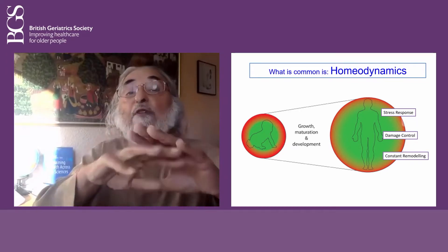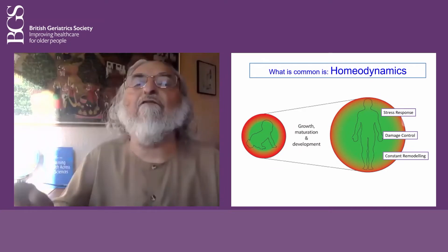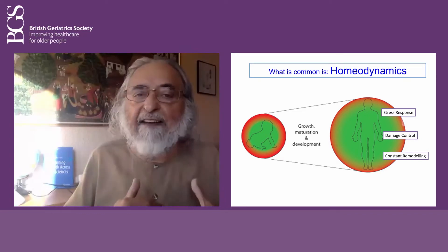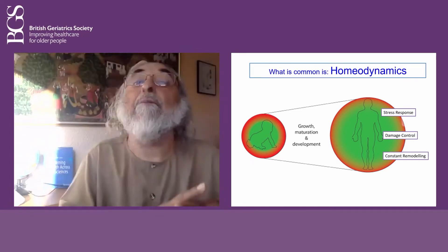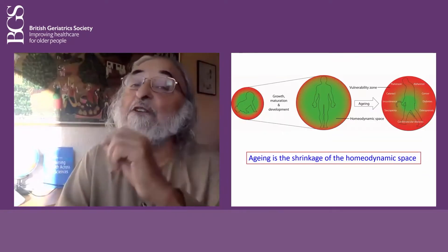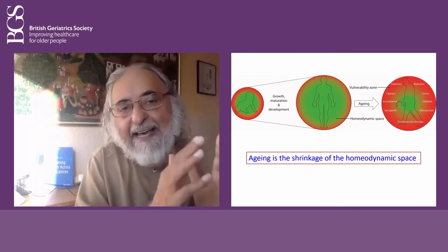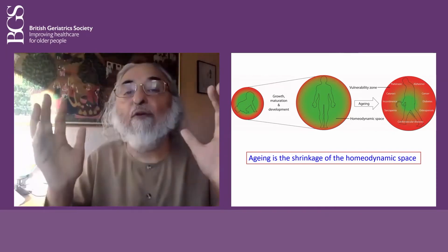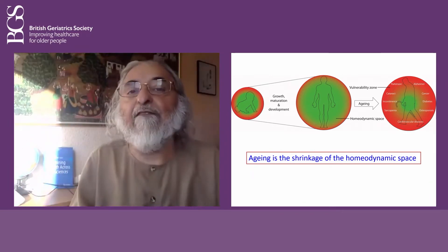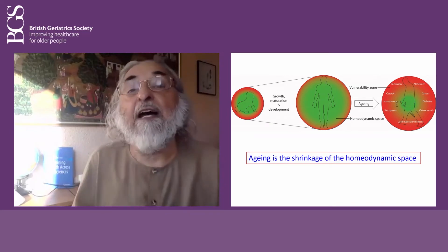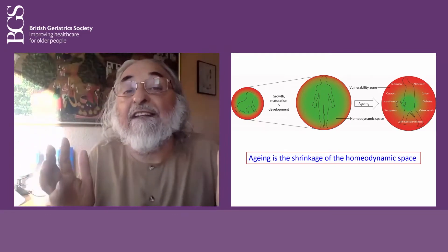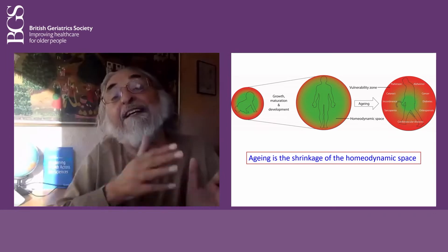If we have a homeodynamic space with a certain vulnerability zone, things can go wrong at any age, but before essential lifespan very few things go wrong unless there are other problems. That is what gives us survival ability. When we talk about aging, the third part is that aging is the progressive shrinkage of the homeodynamic space — our ability to tolerate stress, remove and repair damage, and adapt and remodel becomes lesser and lesser during the period of survival beyond essential lifespan.